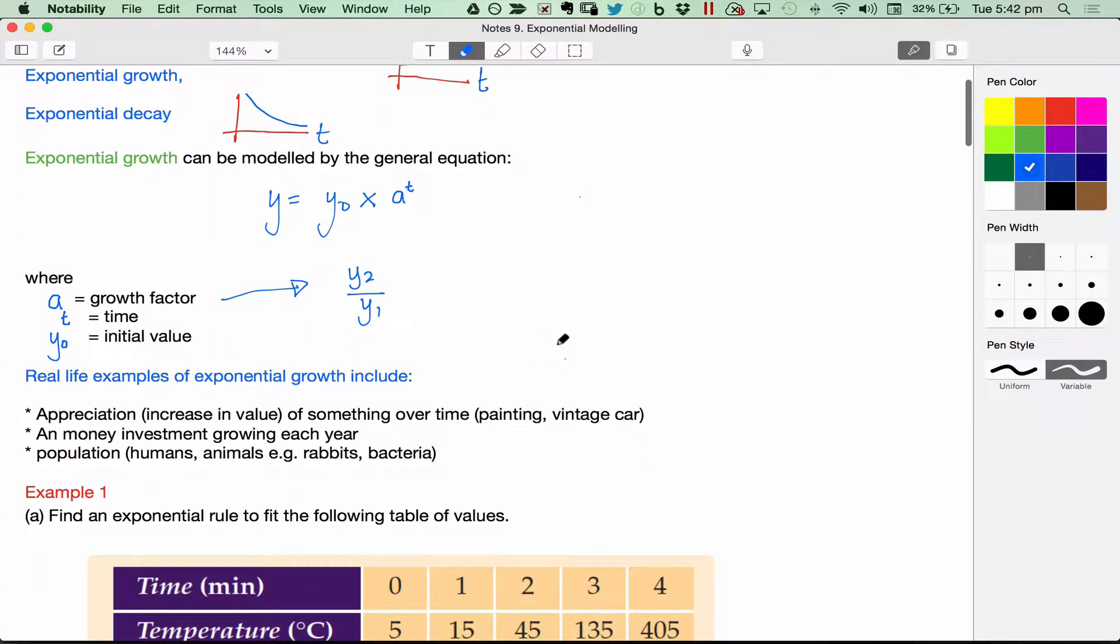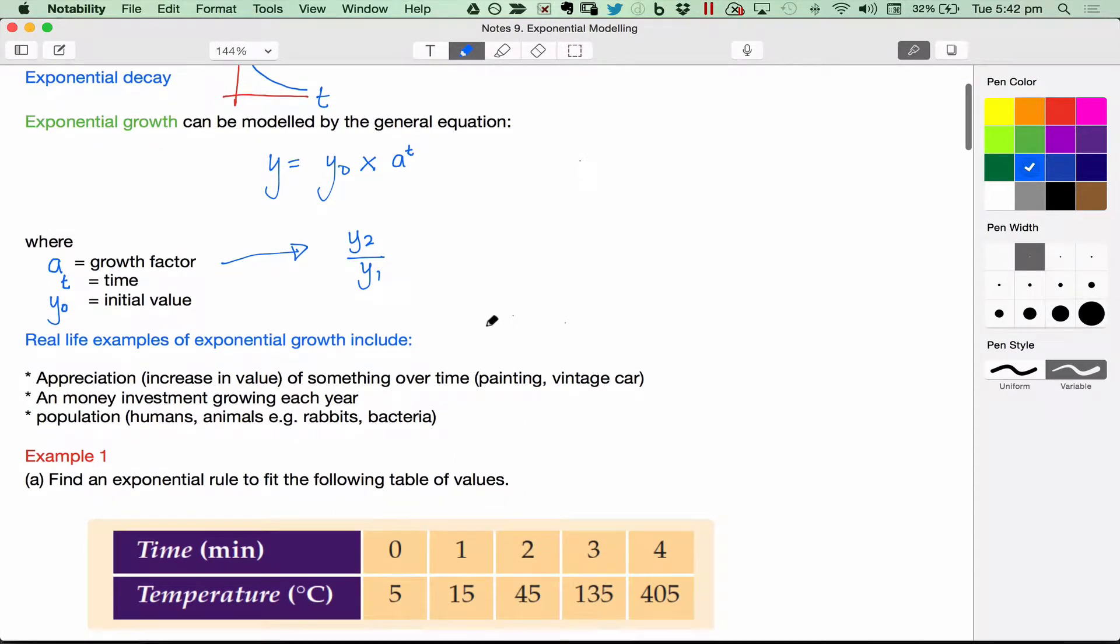Real life examples of exponential growth that you might be asked to model would include appreciation, which is when you buy something and it increases in value over time. For example, an old painting that's worth a lot of money and it keeps getting worth more and more money every year. A vintage car that might increase in value over time, something like that. There's a spelling error there. A money investment that grows each year. You put money, a certain amount in at the start and it keeps doubling or tripling every year.